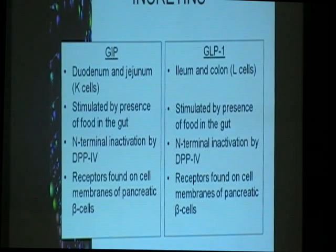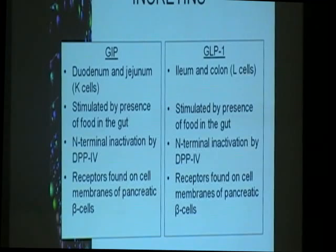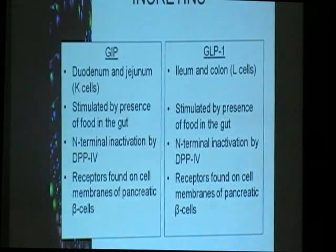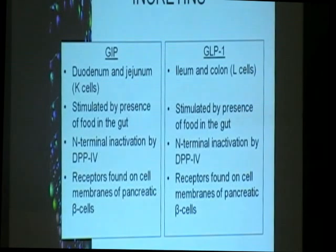The other incretin, your glucagon intestinal peptide or GIP, is produced proximally in the K cells of your duodenum and jejunum. It is stimulated also by the presence of food in the gut, and similarly inactivated by your dipeptidyl peptidase enzyme. Its receptors are also found on the cell membranes of the pancreatic beta cells.